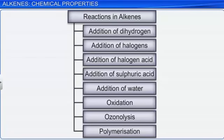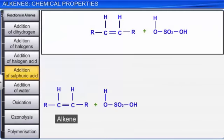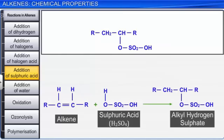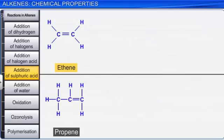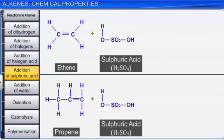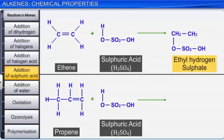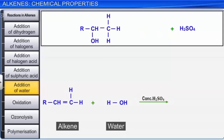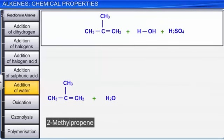Now let us move to the addition reactions of alkene with sulfuric acid and water. Alkenes react with cold concentrated sulfuric acid in accordance with Markovnikov's rule to form alkyl hydrogen sulfates. For example, ethene and propene react with cold concentrated sulfuric acid to form ethyl hydrogen sulfate and propyl hydrogen sulfate respectively. Alkenes also react with water in accordance with Markovnikov's rule, in the presence of concentrated acids like sulfuric acid — a water molecule adds to an alkene molecule across the double bond to form alcohol. For example, 2-methylpropene reacts with water in the presence of concentrated sulfuric acid to form 2-methylpropan-2-ol.